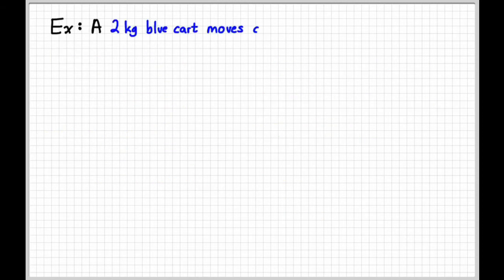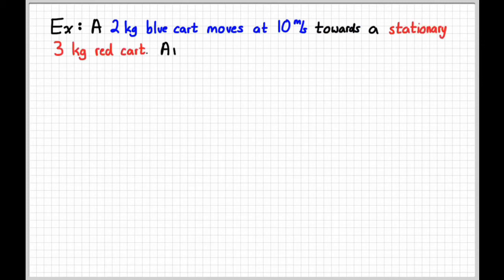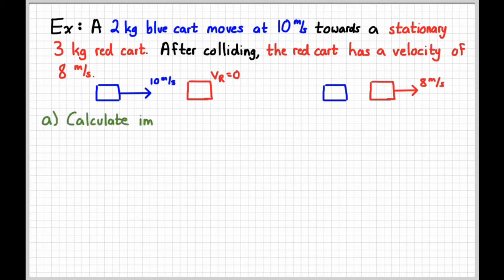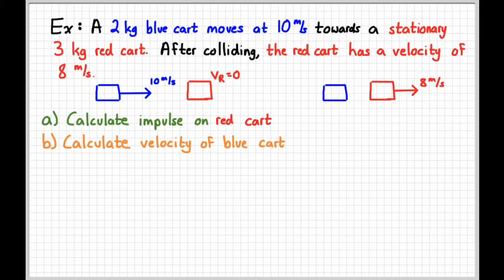So let's do one example together real quick in which we can illustrate a couple of these different things and tie the object and system view together. Here's our situation. We've got a two kilogram blue cart that's moving at 10 meters per second towards the stationary three kilogram red cart. They collide and smack into each other. And afterwards, the eight kilogram cart's moving to the right at eight meters per second. We want to first figure out what happened to the red cart, what impulse was exerted on it, and then also what's the blue cart doing after the collision.